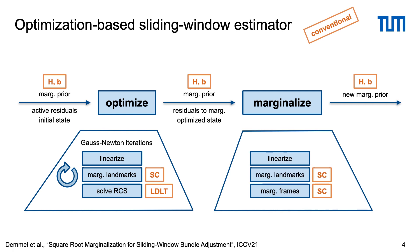Marginalization computes the reduced camera system for a subset of residuals, from which the frame states are then permanently marginalized, also with the Schur complement.